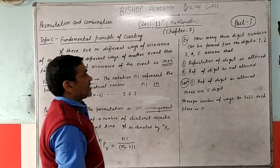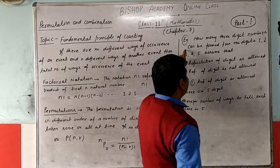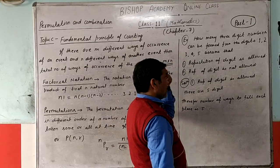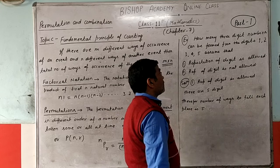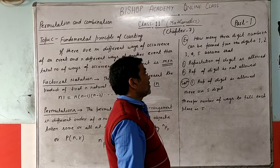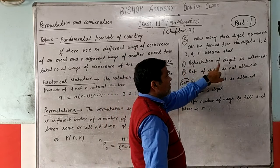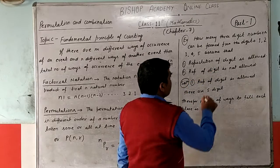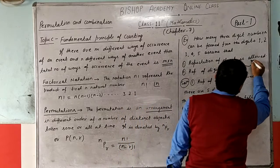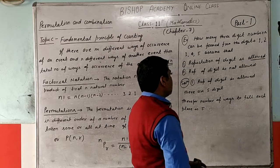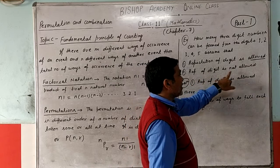For example: How many 3-digit numbers can be formed from the digits 1, 2, 3, 4, 5? First case: repetition of digits is allowed. Second case: repetition of digits is not allowed.